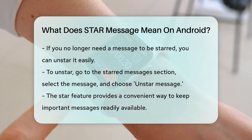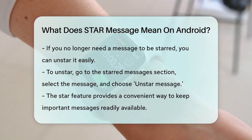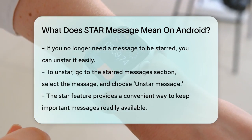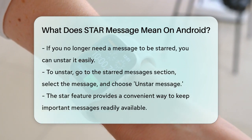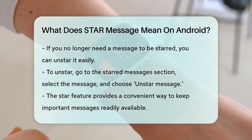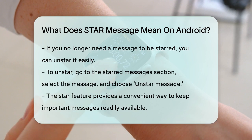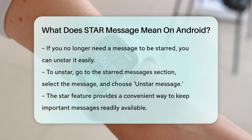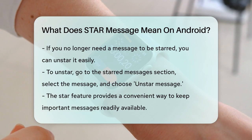If you decide you no longer need a message to be starred, you can unstar it just as easily. Simply go to the Starred Messages section, select the message you want to unstar, and choose the Unstar Message option. So that's what the star icon next to a message means on your Android device — it's a simple but useful way to keep important messages at your fingertips.